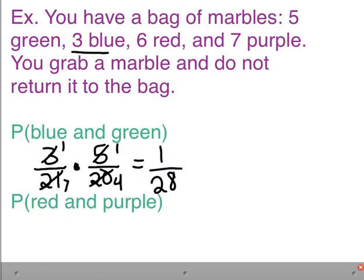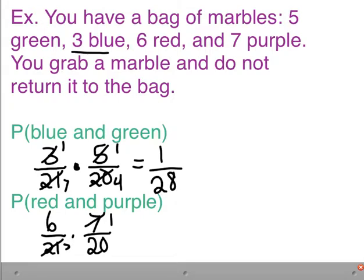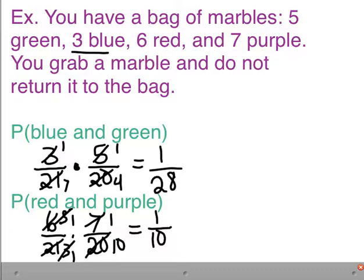For red then purple, we start fresh with 21 marbles. Probability of red is 6/21. Keeping it leaves 20 marbles with 7 purple. Simplifying: 7/21 = 1/3, and 6/20 = 3/10. Then 1/3 and 3/10 — the 3s cancel — giving 1/10. The probability of drawing red then purple without replacement is 1/10. These are dependent events because the first draw affects the total pool for the second.